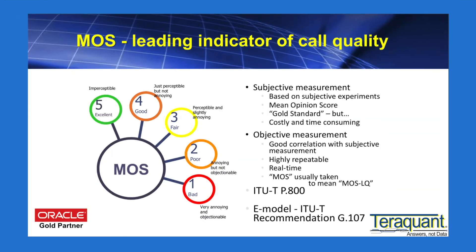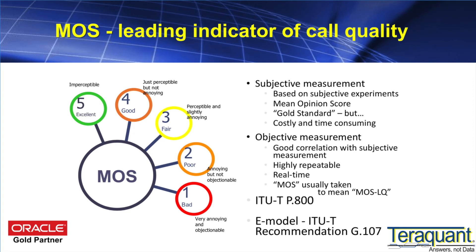Let's have a quick look at the MOS scale. MOS is typically a subjective scale derived from human beings listening to tapes and voice clips containing impairments, and rating them on a scale from one to five — one being extremely bad, the worst, and five being perfect. Typically we don't rate anything as being perfect, so in a real scenario 4.5 or 4.4 is about the maximum you will ever see measured in live networks. We need to automate this, and this is where technology such as the E-model, R-factor, PESQ, and POLQA come in to allow a computer to analyze the quality of the speech.